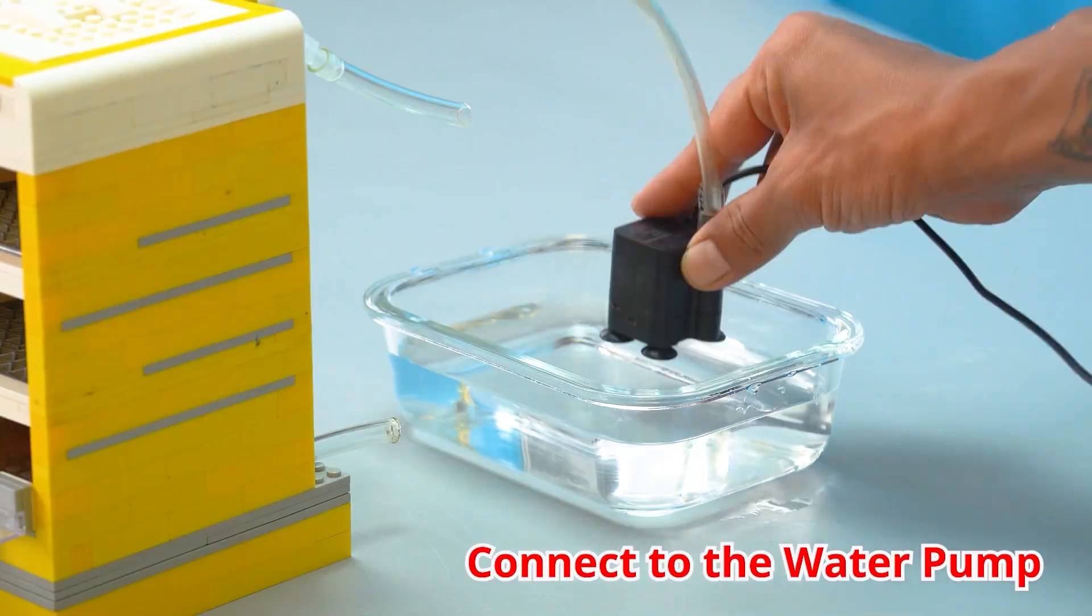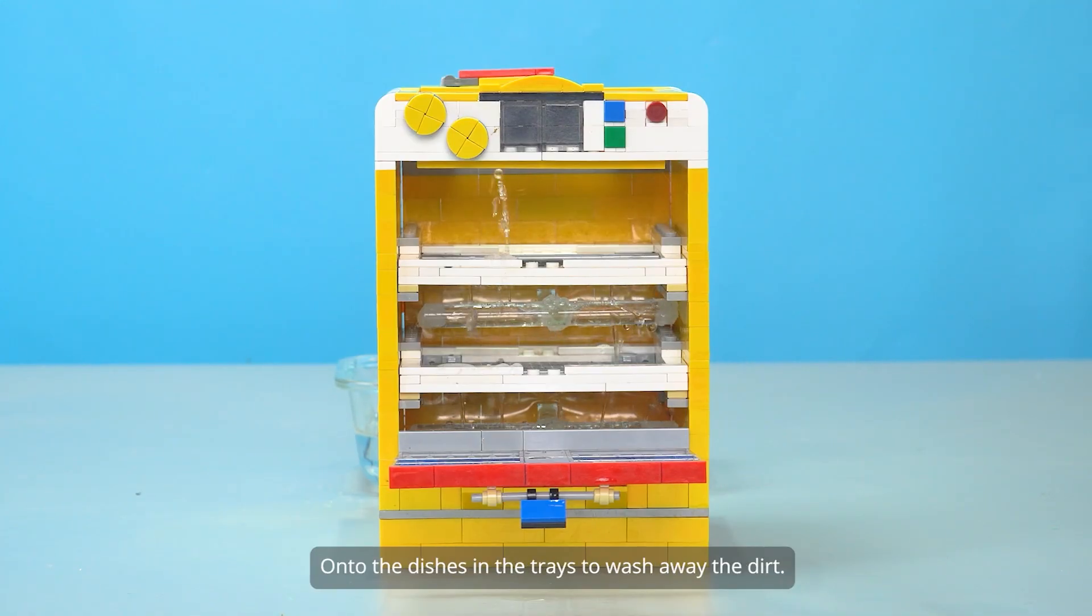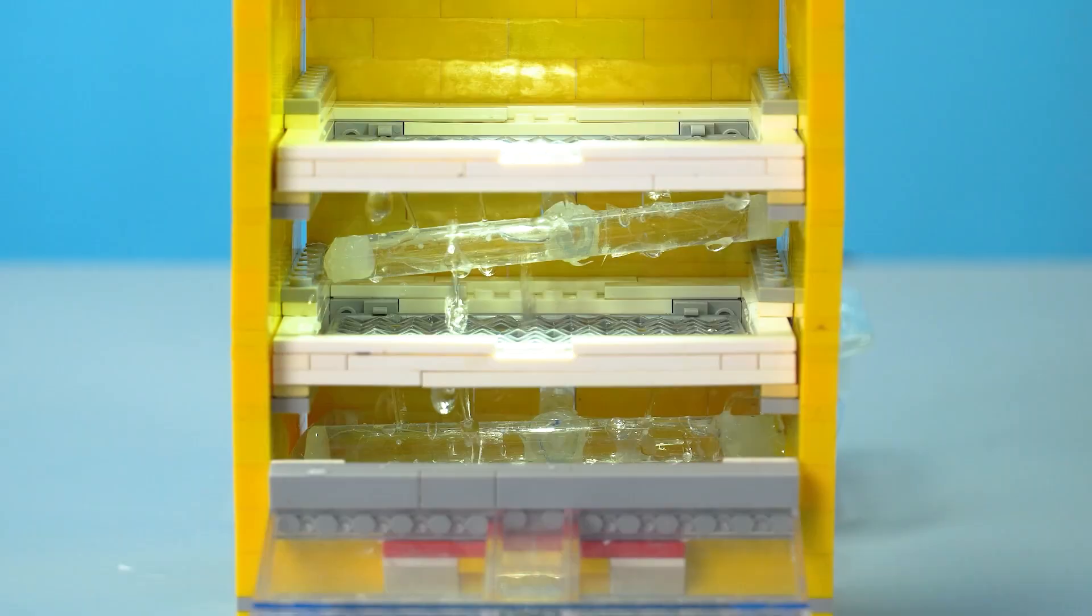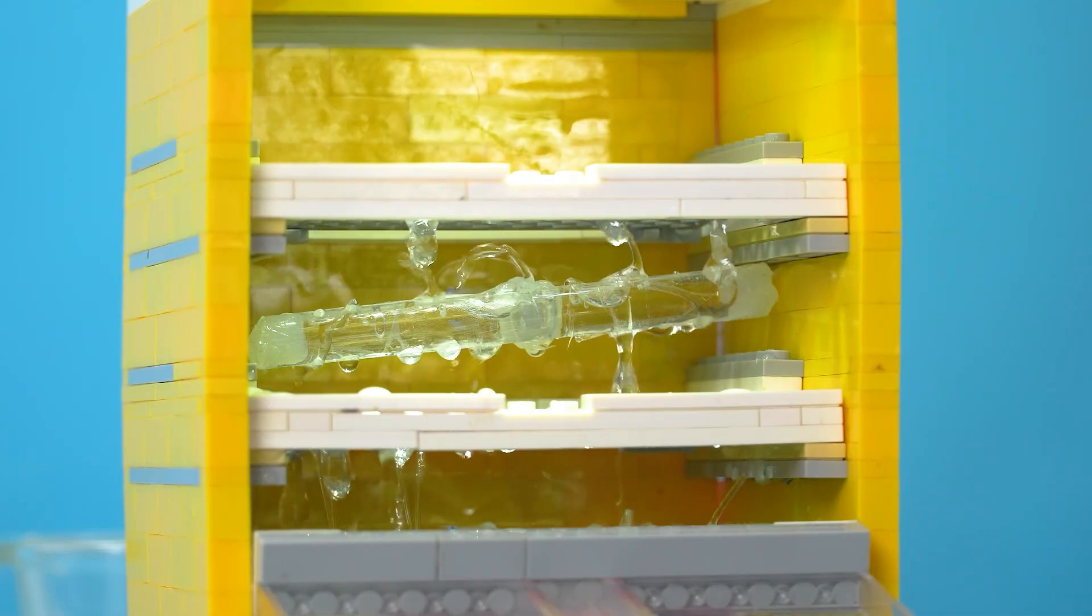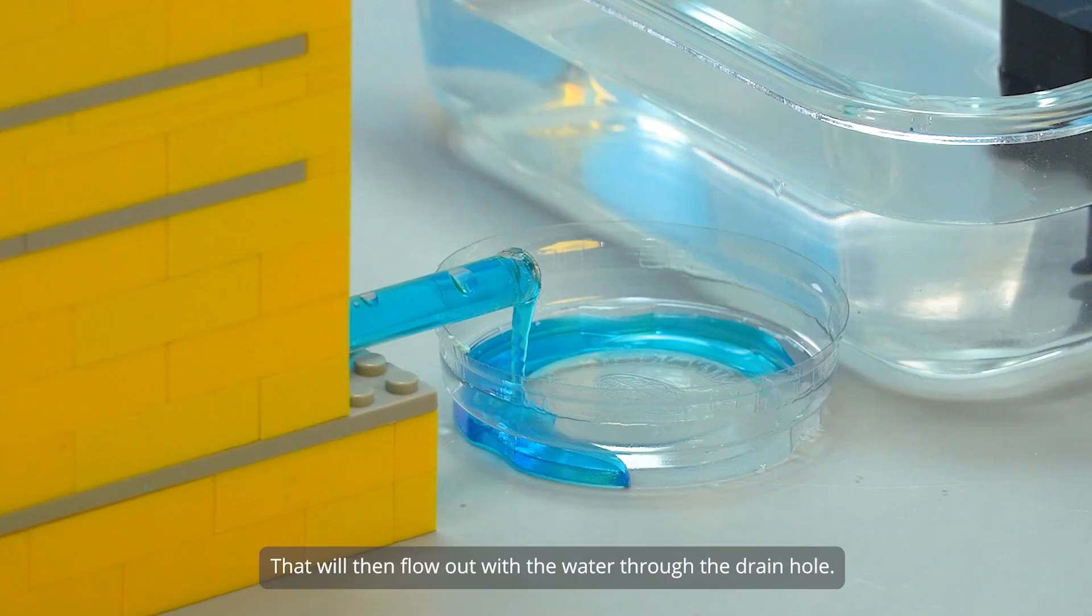Testing. Connect to the water pump. Water will be sprayed from the spray arms onto the dishes in the trays to wash away the dirt. That will then flow out with the water through the drain hole.